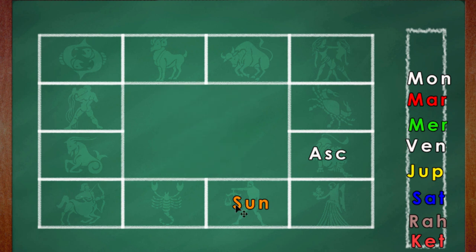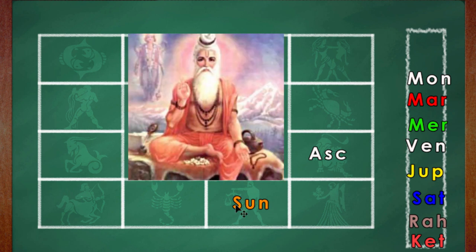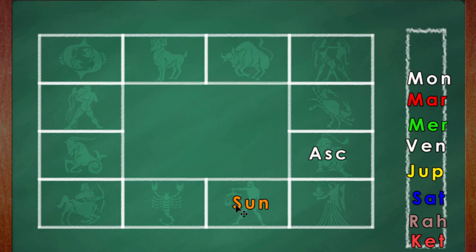So I'll be referring to Bhrigu Sutra. The author is Sage Bhrigu, so it comes from very ancient times. But you know, also read in between the lines because in Bhrigu Sutra, as far as the Sun in the third house is concerned, it just deals mostly with brothers and courage.